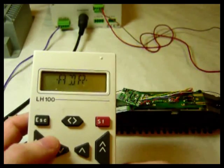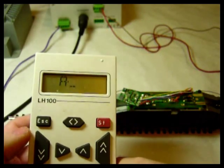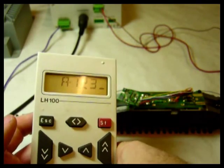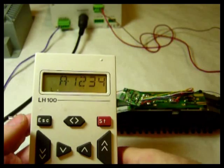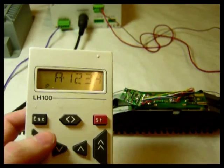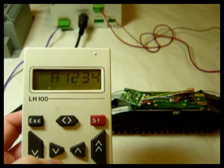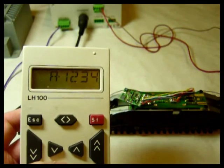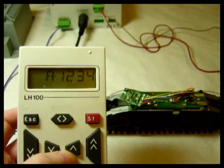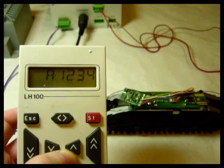So into address, this is for long addressing. And you can put in the 4 digit address that you want, and it will program it. And what it's doing in this case is telling CV29 that you're going to use long addressing, and then splitting that long address between 17 and 18.